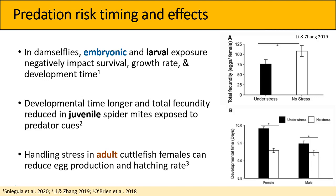Another study found that predator cue exposure in juvenile spider mites lengthened development time and decreased total fecundity. Looking at the graphs on the right side of the screen, the upper graph shows that reduction in fecundity, with the black bar representing females who received predator cues as juveniles and the white bar representing control females. The lower graph shows the lengthening of development time for both male and female spider mites.